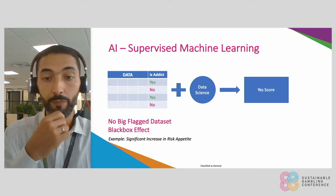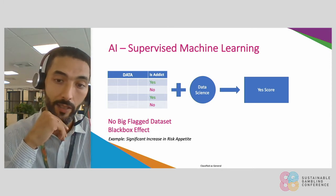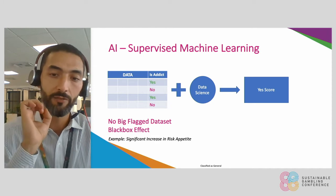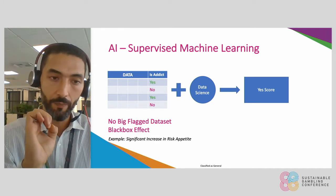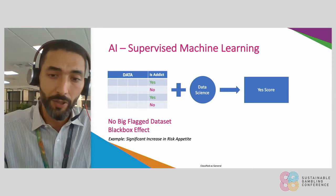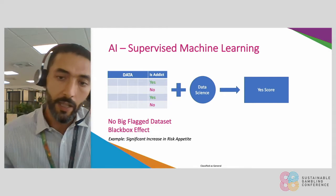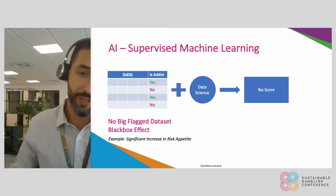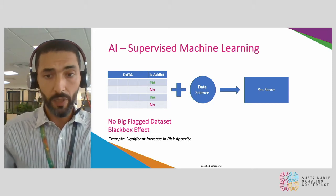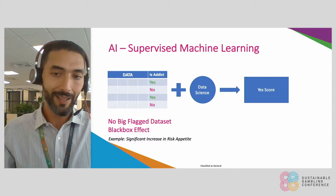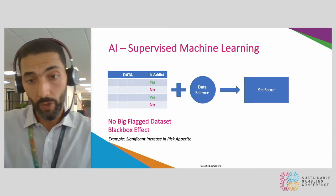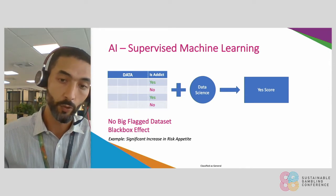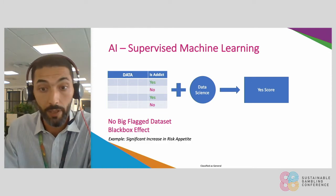However, the big issue is that we do not have a large flagged dataset. No one can actually say they have thousands or millions of observations where you have an accurate flag saying yes or no, this is problematic behavior. You could select a proxy measure like self-exclusion — seeing whether a player self-excluded — thinking it would share similar behavior to an addict. But the problem is that the algorithm learns from the yes and no; if a bunch of players are addicted but don't self-exclude, the algorithm will classify them as 'no,' and you will never be able to capture those behaviors. You also suffer from a black box effect, depending on the algorithms used.